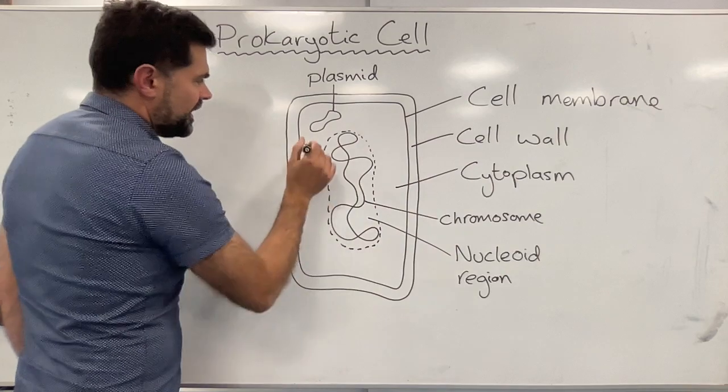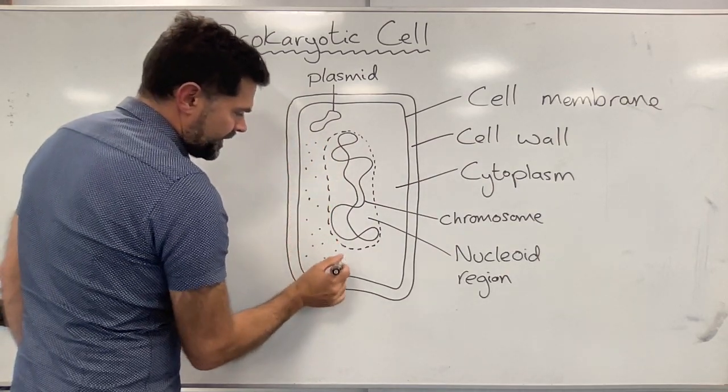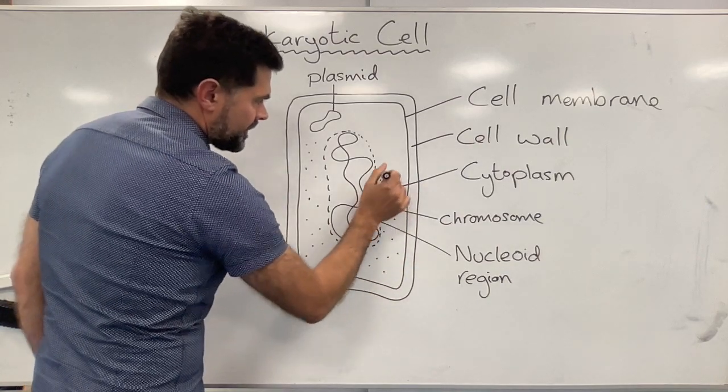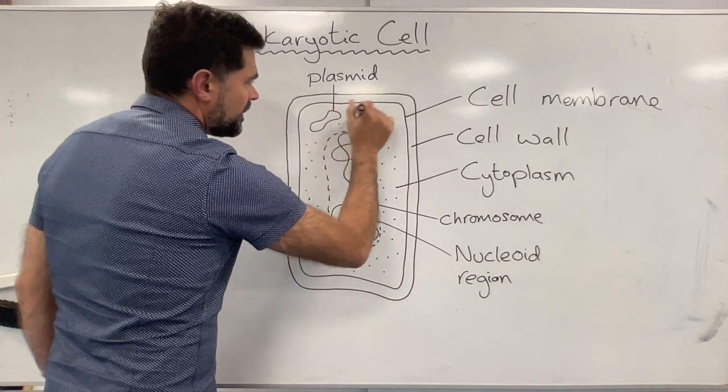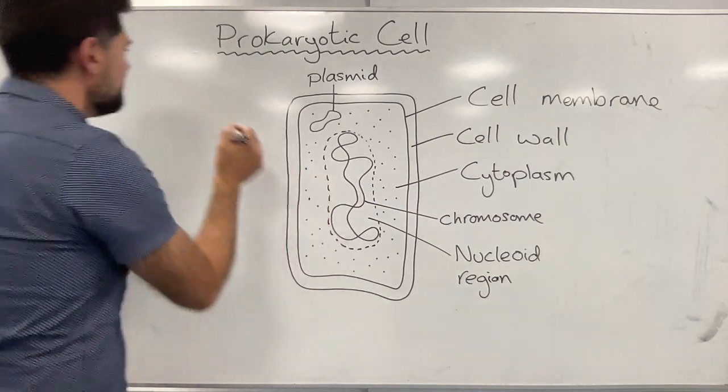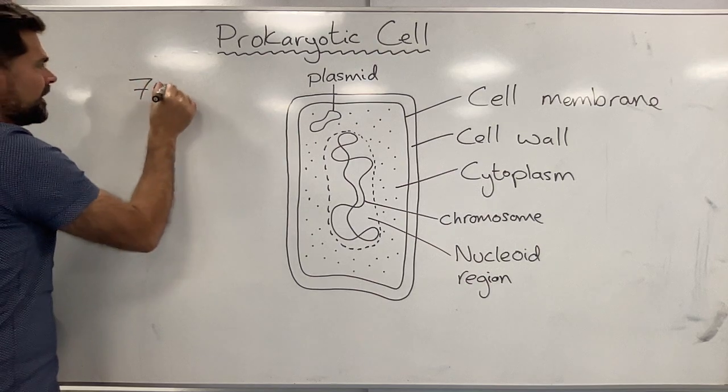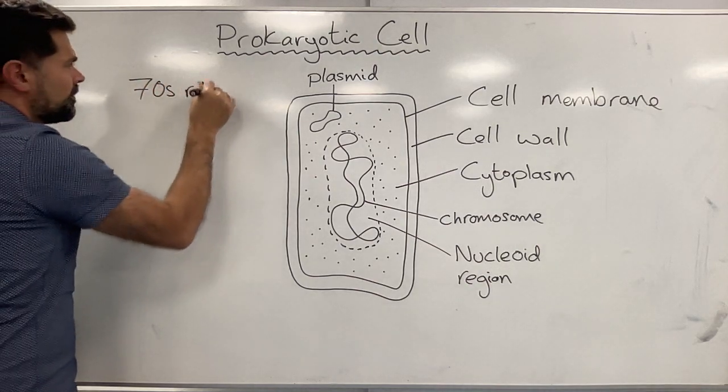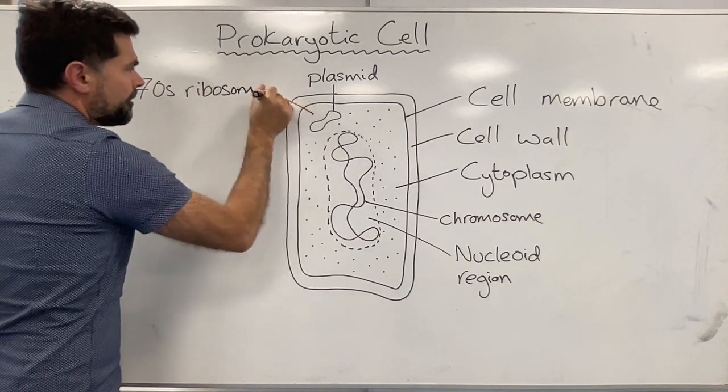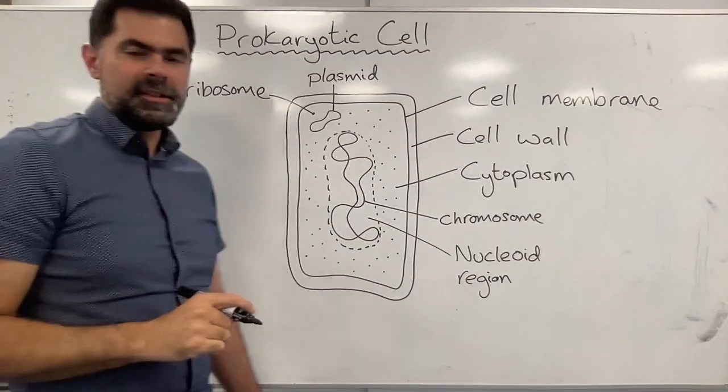Also dotted around the cytoplasm, which normally have a bit of a grainy appearance, are ribosomes. In bacteria we call these 70s ribosomes. The 70s just represents the size of it. The function of the ribosome is to synthesize proteins.